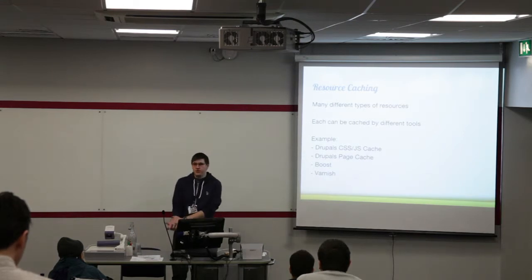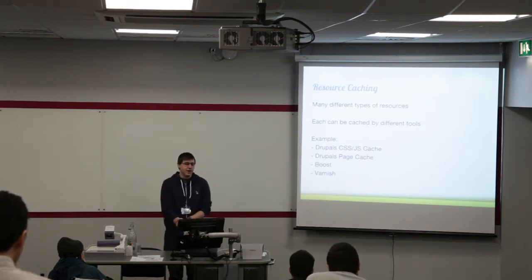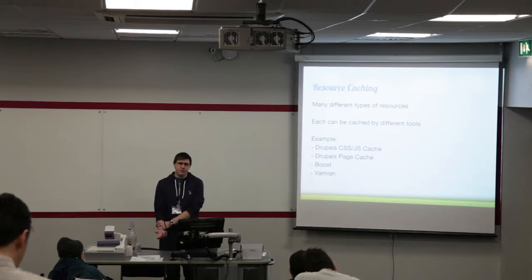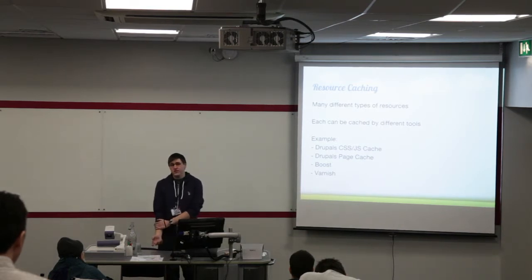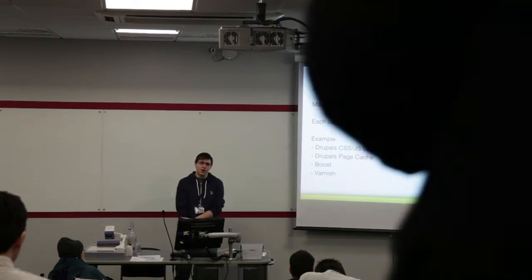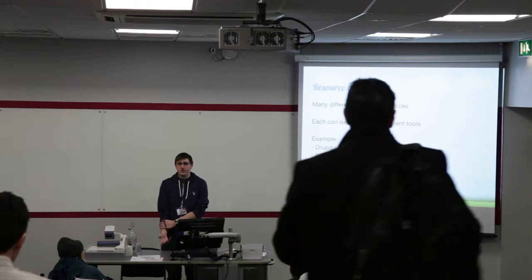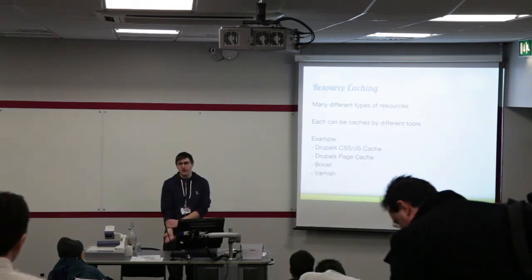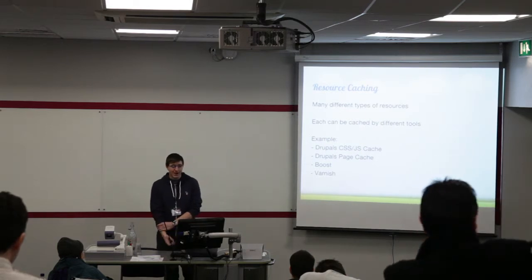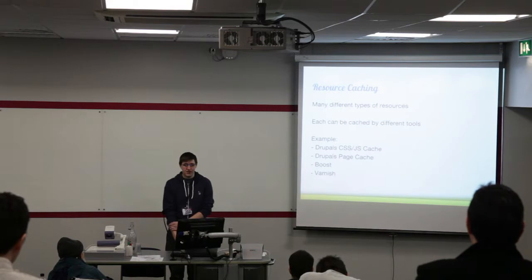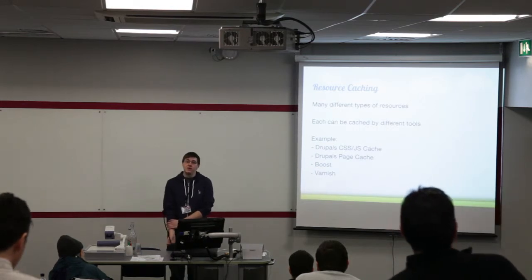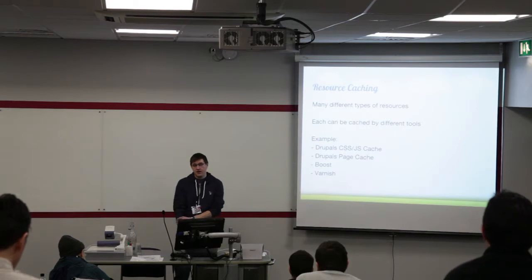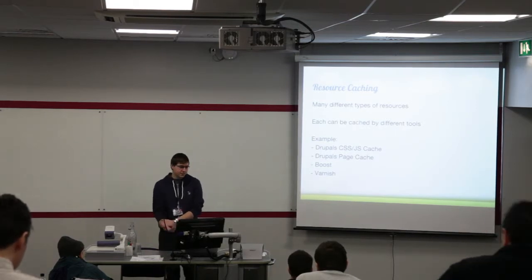There are many different types of resources on a site, and each can be cached by various different tools. When looking at resource caching, it's best to take a holistic approach. Drupal has its own CSS and JS caching in the form of aggregated CSS and JS — it minifies things and brings page load times down. Drupal's page cache uses its core caching tables. There are third-party modules such as Boost, and server-level tools like Varnish.